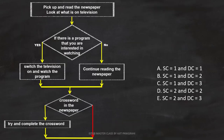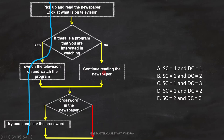Now let's find the correct answer. We have to find the number of test cases for statement coverage and decision coverage. With this path, three statements are covered but one statement is not covered. That's why we need another test case to cover it. That means we need two test cases to cover 100% statement coverage. With this, we can also cover all the decisions. So option D is the correct answer.